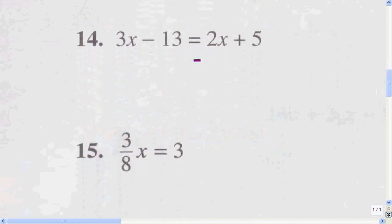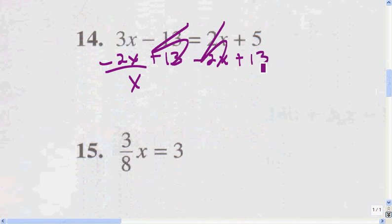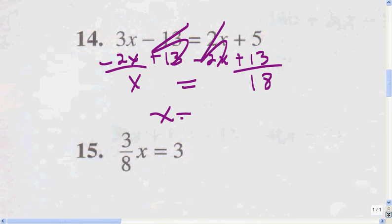I'm going to subtract 2x from both sides, giving me just x. Then I'm going to add 13 to both sides, which gives me 18. So x equals 18.